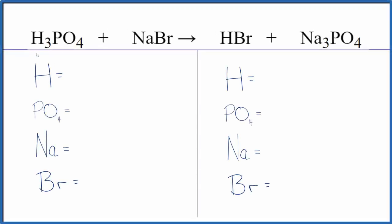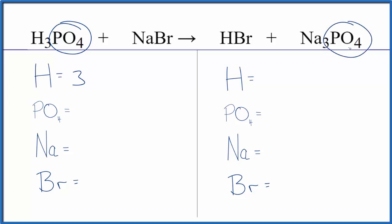Let's balance the chemical equation H3PO4 plus NaBr — this is phosphoric acid and this is sodium bromide. We use a bit of a trick here to help us balance the equation. First we have three hydrogen atoms and then this PO4, which is the phosphate polyatomic ion. We have it here and over here, so we're going to count it as just one thing. That makes it a lot easier to balance.